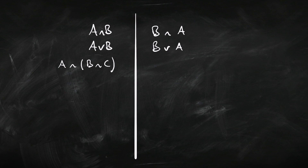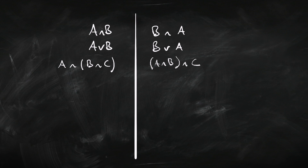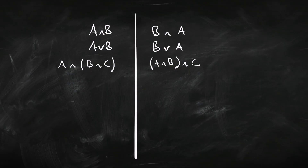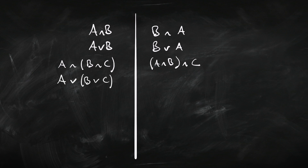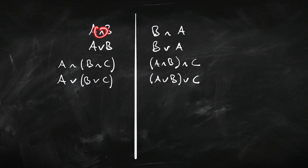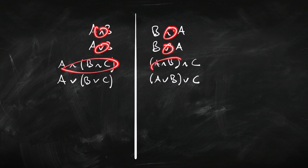A and (B and C) is equivalent to (A and B) and C. This basically means all three of A, B, C are true, so it doesn't matter where we put the brackets. Similarly, A or (B or C) is equivalent to (A or B) or C — if that's true, at least one of those three is true, so again it doesn't matter which way we put the brackets in.